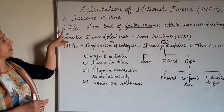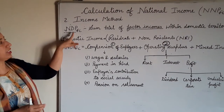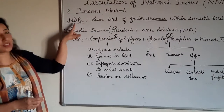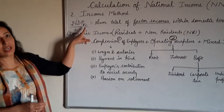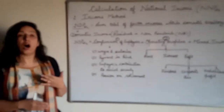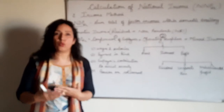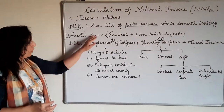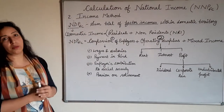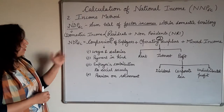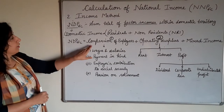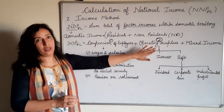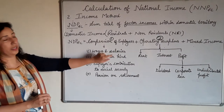What we are going to calculate with the income method is NDP at FC — Net Domestic Product at Factor Cost. The formula has three parts to calculate this NDP with the help of the income method.